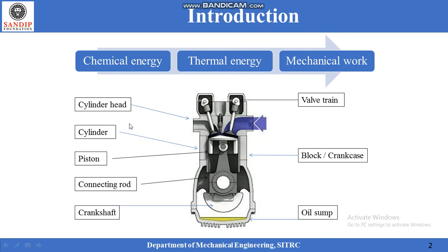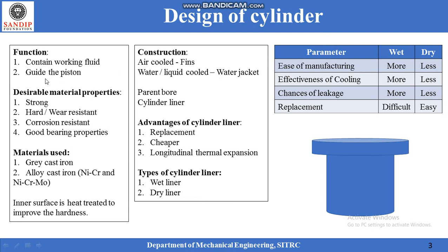Thus the most important parts of an IC engine are cylinder head, cylinder, piston, connecting rod, and crankshaft. All these parts are designed against the maximum gas pressure in the combustion chamber of an engine. Let us start with the design of the cylinder. Its function is to contain the working fluid and guide the piston.